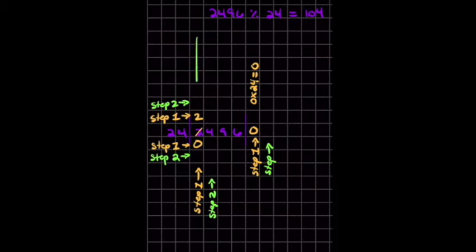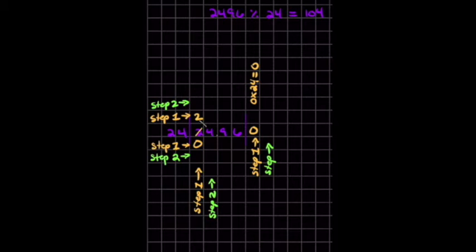Step 2 — I'm going to use this column and this column. The reason you use the first column also is because there's a 2 here and a 4. So 24 does go into 24. It goes in one time — 1. 1 times 24 equals 24. So I'm going to transcribe my 24 here: a 4 here and a 2 there. Now 2 minus 2 is 0, and 4 minus 4 is 0.